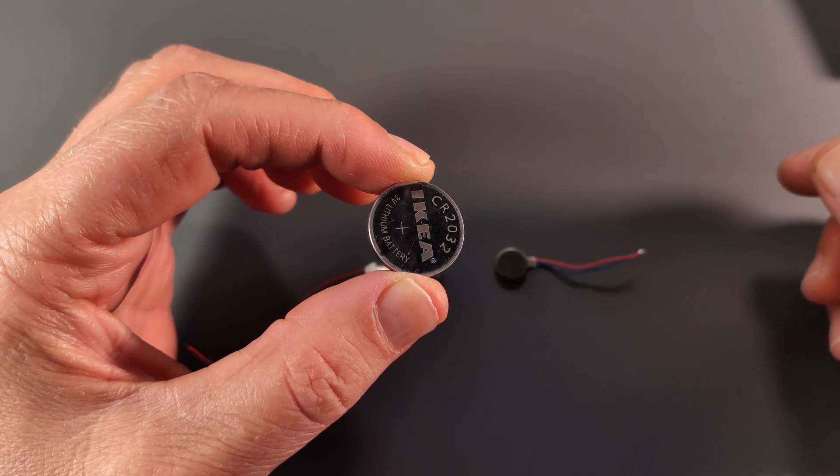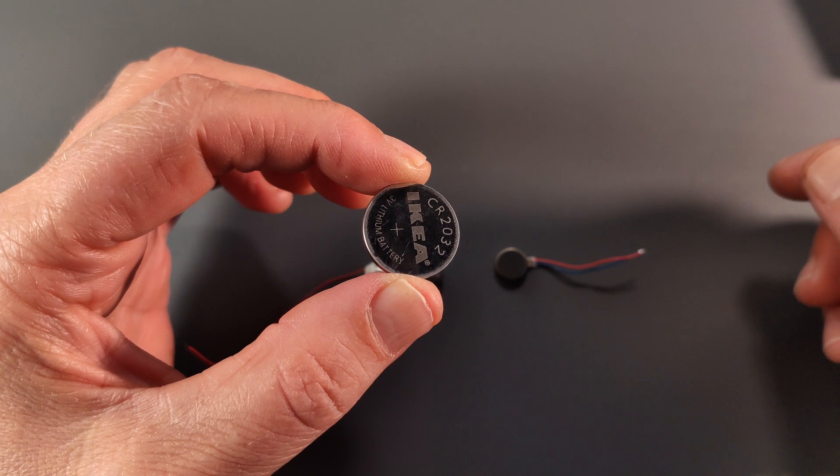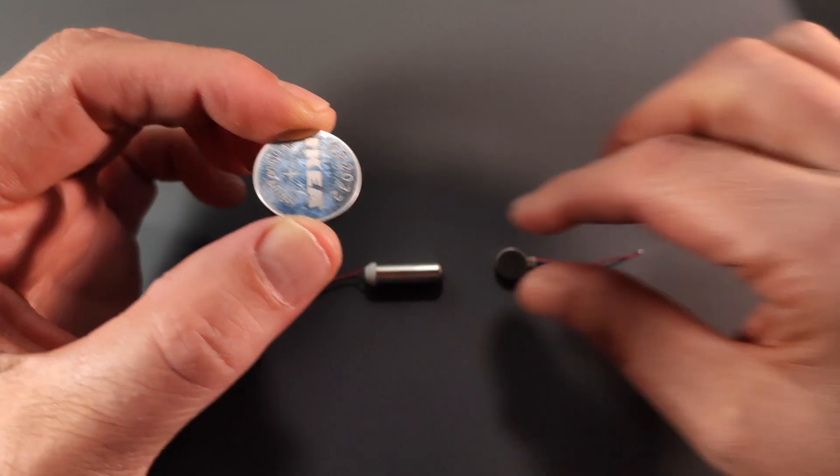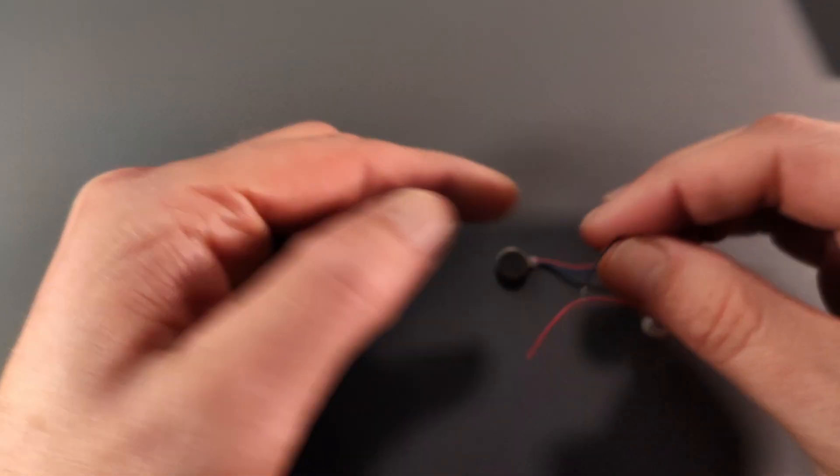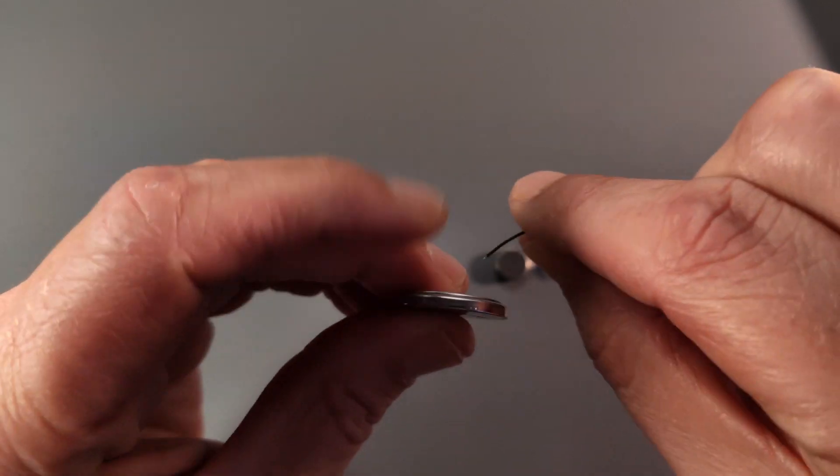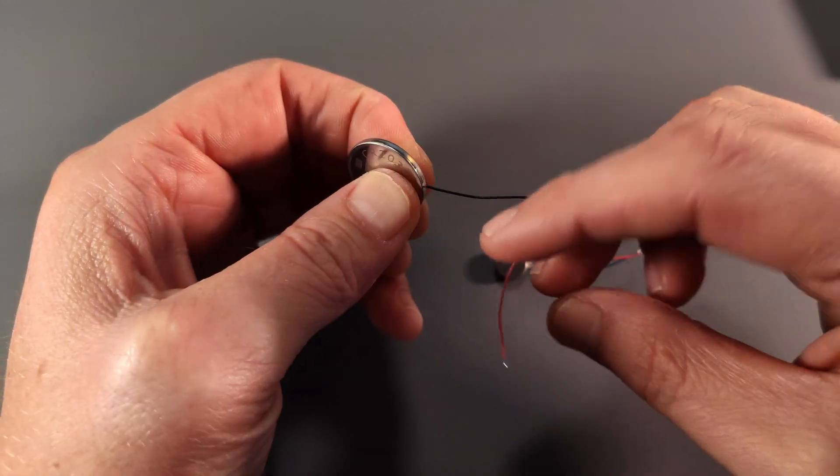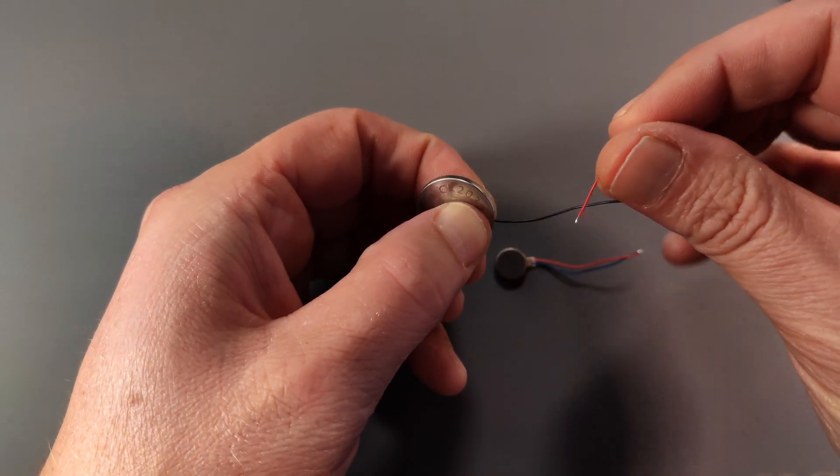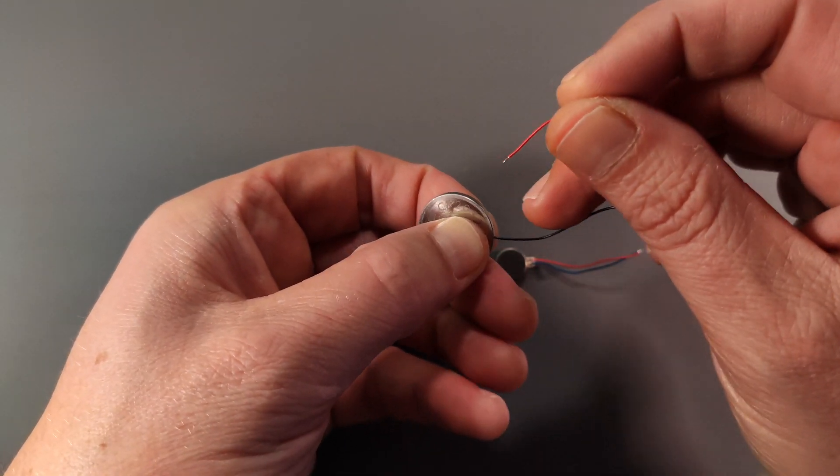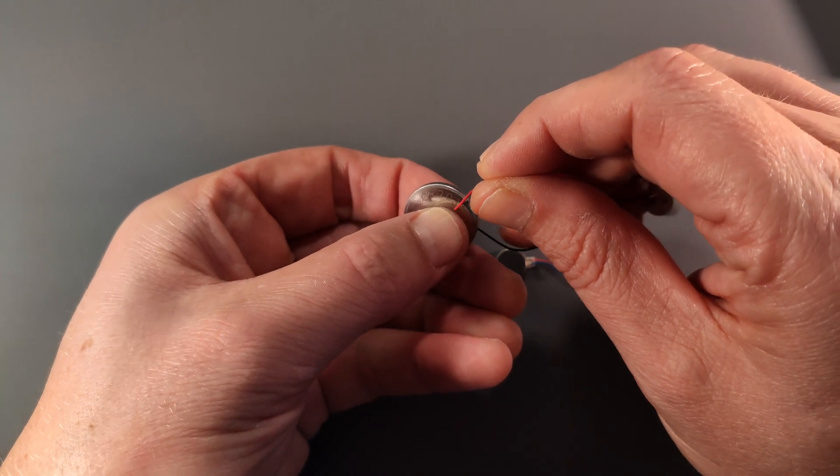The first thing I'm gonna do is to use this coin cell and see if I can actually get some vibration out of it. So I'm just gonna touch the negative lead to the negative side of the battery and it shouldn't really matter because it's a DC motor but still. And the positive lead to the positive side.